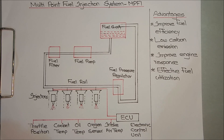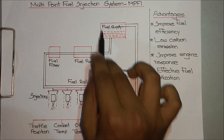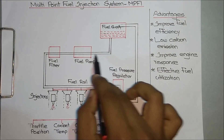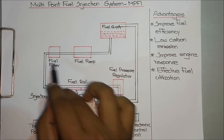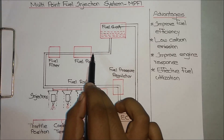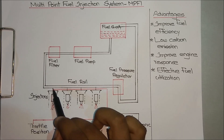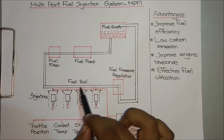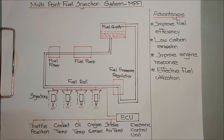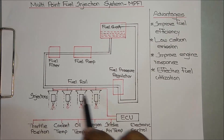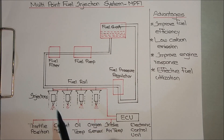The various components of the multi-point fuel injection system include: a fuel supply where we store the fuel, a fuel pump to pump the fuel through the circuit, a fuel filter to filter out contaminants, a fuel rail from which fuel is supplied to the injectors, and a pressure regulator to regulate the fuel pressure flowing through the circuit.